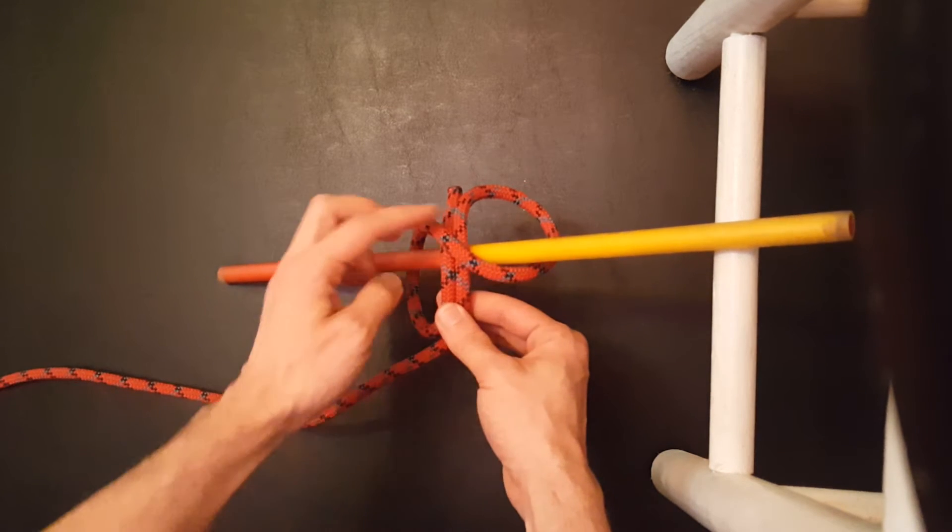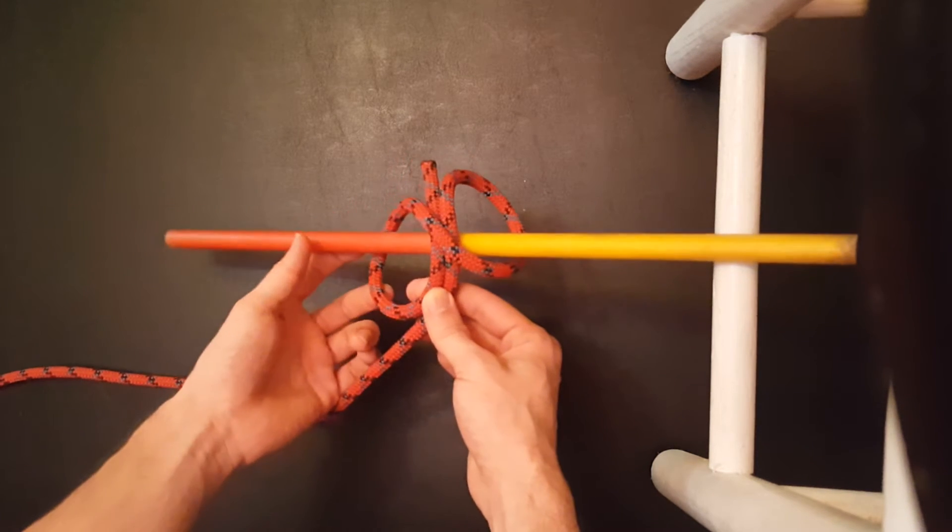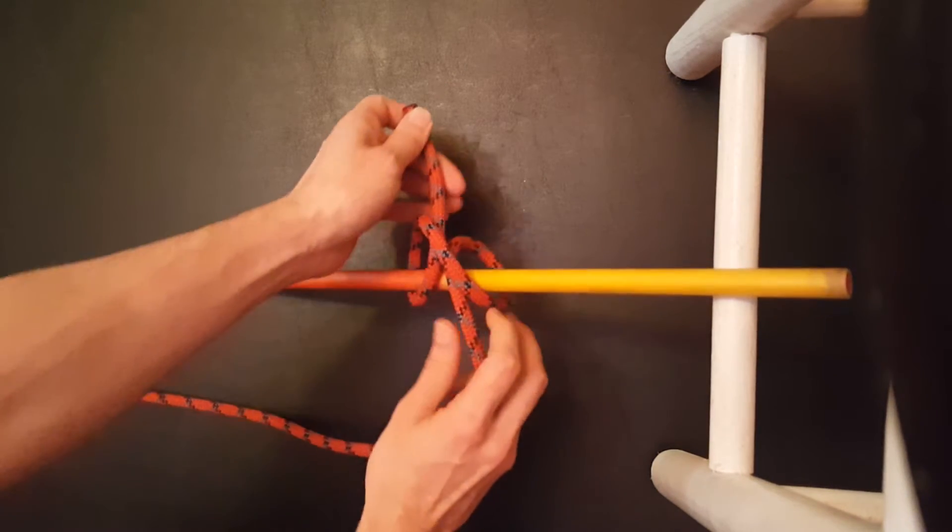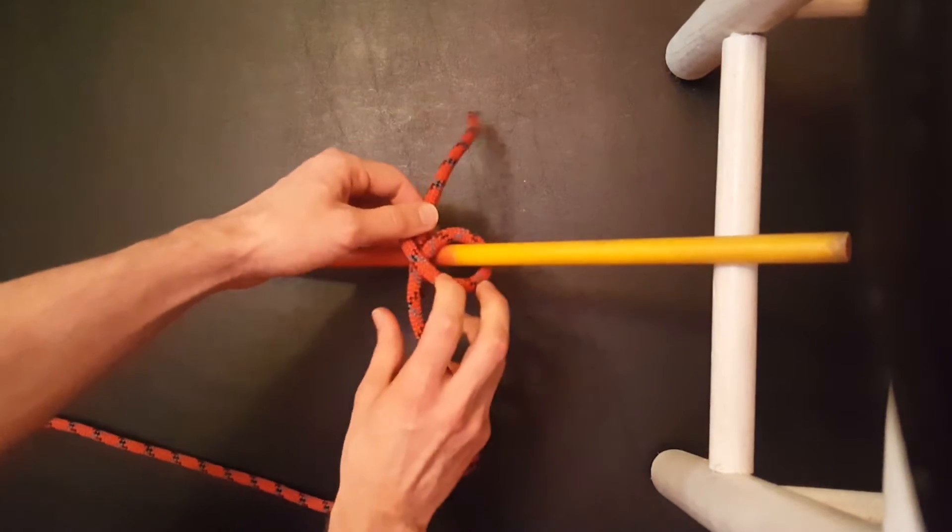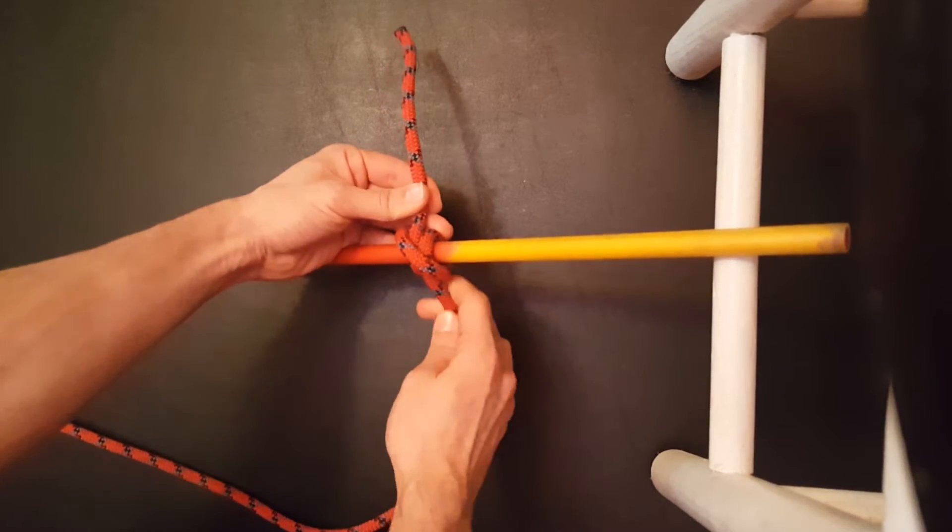And then I also have these two loops, one on the bottom, one on the top. And if we pull that closed, we have created our nice clove hitch. There we go.